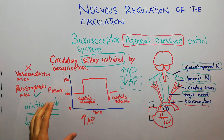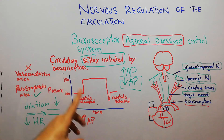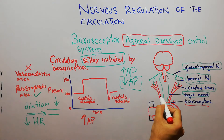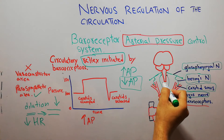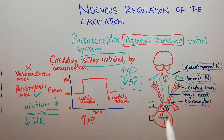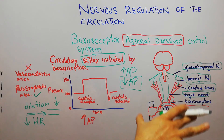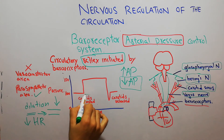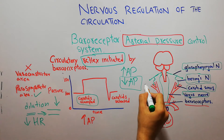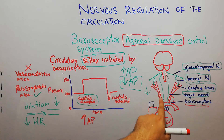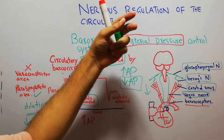To prove that baroreceptors help in maintaining arterial pressure, we are doing an experiment. In a normal person, both carotid arteries are clamped so that no blood is flowing to these carotid sinuses. Baroreceptors are present at the bifurcation and in the aortic arch, so baroreceptors in the aortic arch are still present, but blood supply to the carotid bifurcation is clamped. As soon as the carotids are clamped, blood flow in these vessels drops, and arterial pressure at the carotid level also drops.